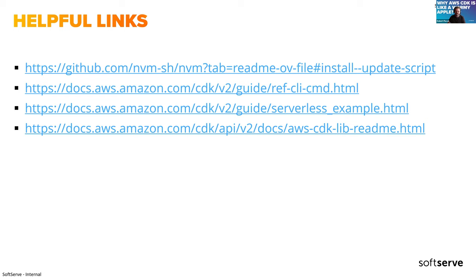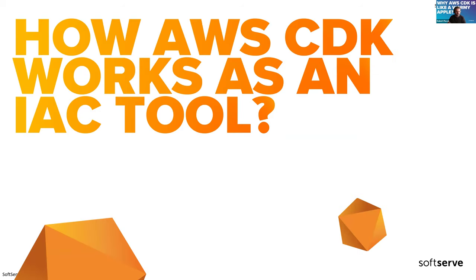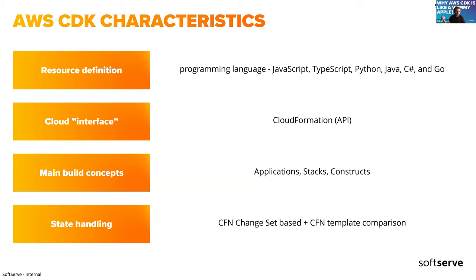Moving on to the second topic: how AWS CDK really works as an IaC tool. The main characteristic we can highlight for CDK is resource definition. Here you use one of several available programming languages — JavaScript, TypeScript, Python, Java, C#, or Go. You just pick the one you like and you're good to go. By comparison, Pulumi also allows multiple programming languages, but with Terraform you're limited to HCL or JSON.